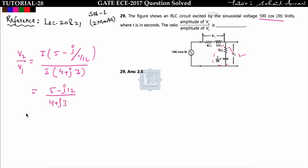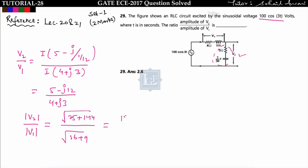So V2/V1 equals (5 minus j12) upon (4 plus j3). The magnitude of V2 upon magnitude of V1 equals under root of (25 plus 144) by under root of (16 plus 9), that is 13 by 5, which equals 2.6. This was asked in Set 1 for 2 marks, and the concept has been discussed in lectures 20 and 21.